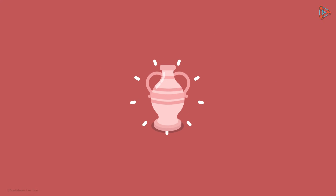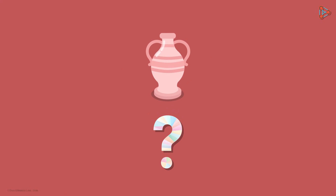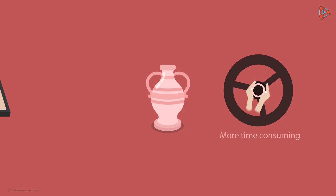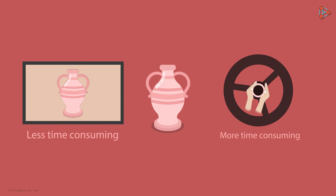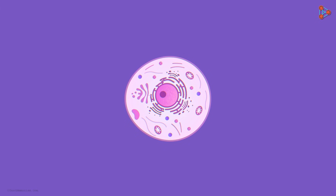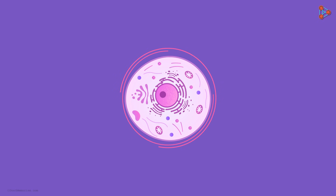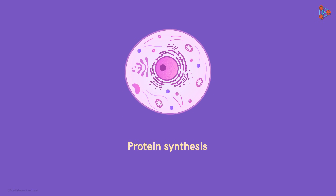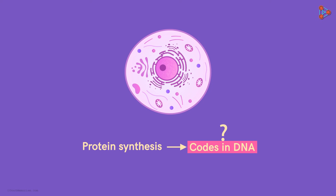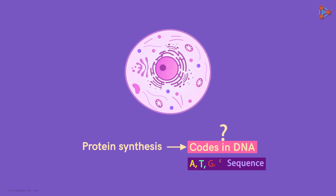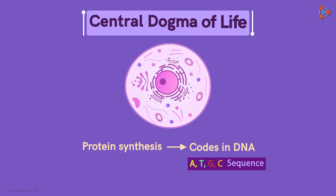Imagine we have a beautiful article with us. What if we want to make a copy of it? The best way would be to make use of a cast or a mould. Similar strategies are used by our cells. The most important task for a cell is to synthesize proteins based on the codes in DNA. But how are these codes read? What is the process that helps decode this language? And are proteins synthesized merely by the sequence of A, T, G and C? The answer to all these questions lies in the central dogma of life.